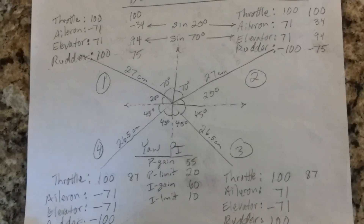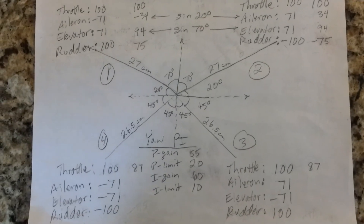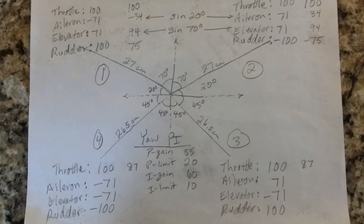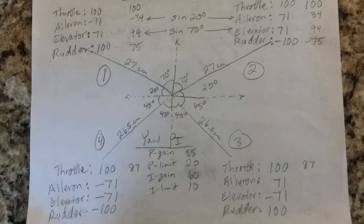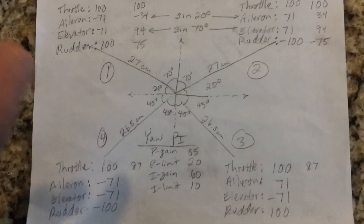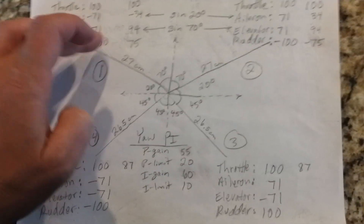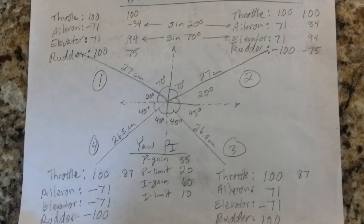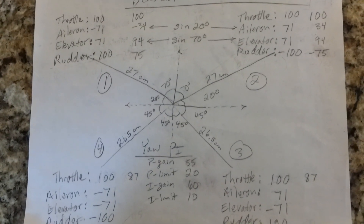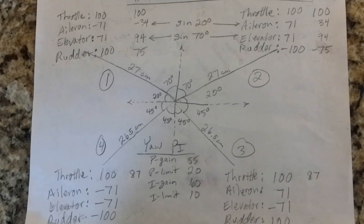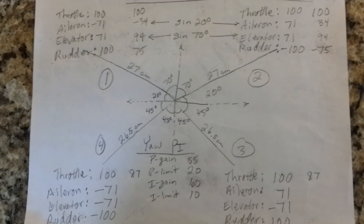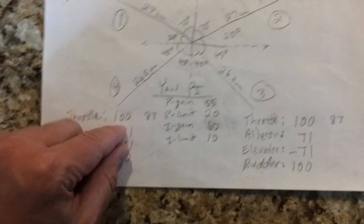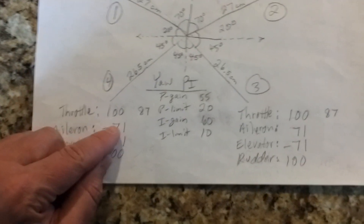Here are the new settings in the mix editor. The column on the left is the original settings and the column on the right is the new settings. You take the sine of 20 for ailerons and the sine of 70 for elevator for the front two motors. The back two motors remain at the sine of 45.